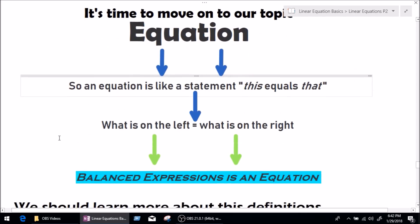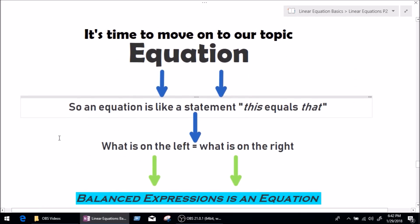What is an equation? Well, equation is basically something equals something. Like, you can say, this equals that. Or, we can say what is on the left is equal to what is on the right side. My favorite definition is balanced expression is an equation. Because, that's what equations are. Let's see how.